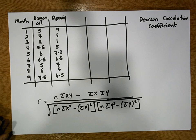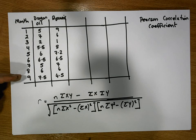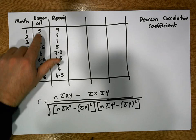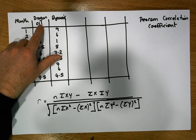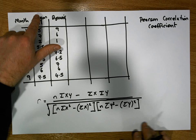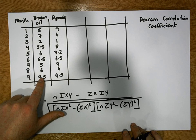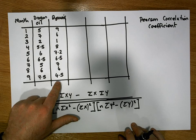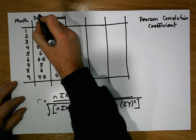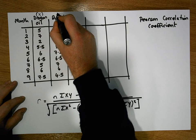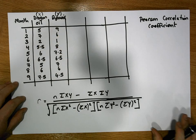In this particular situation we have nine paired observations on two stocks. The first stock is Dragon Isle and the second is Ryanair. Dragon Isle is considered the independent variable (x values) and Ryanair is the dependent variable (y values).